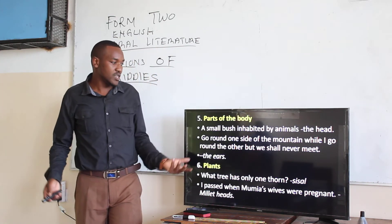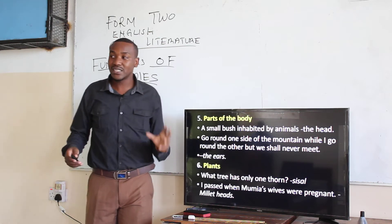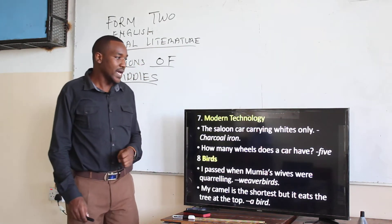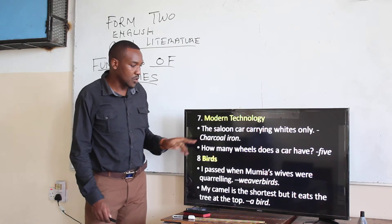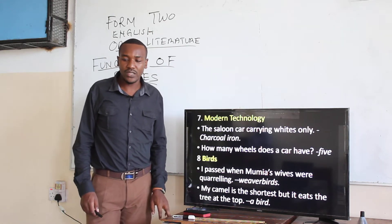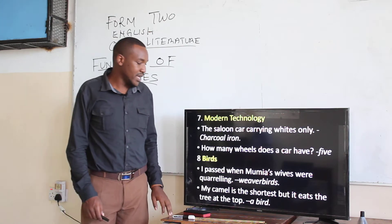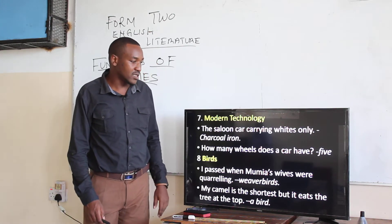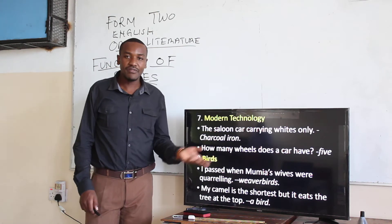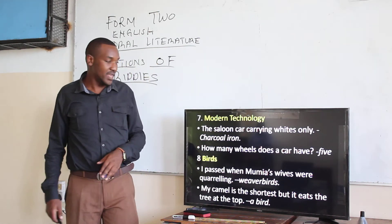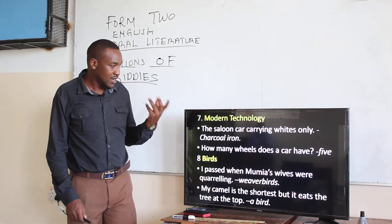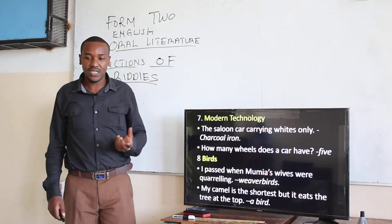Then we have riddles about modern technology. Example: 'The saloon car carrying whites only' — the answer is a charcoal iron. And then: 'How many wheels does a car have? Five.' Cars were not part of traditional culture, but because of modernity such riddles are created.